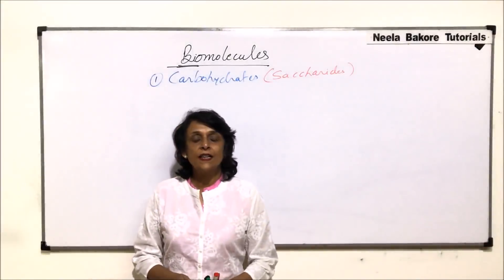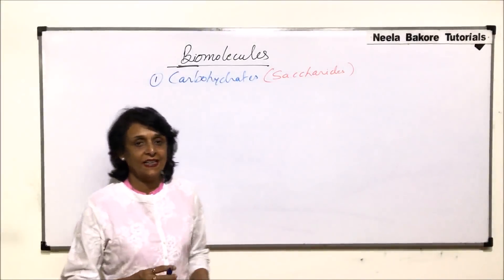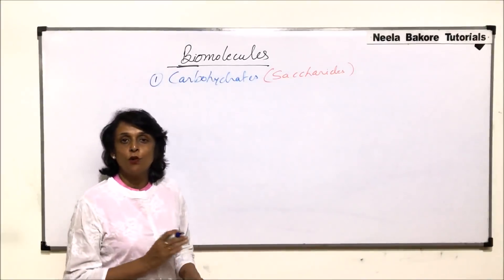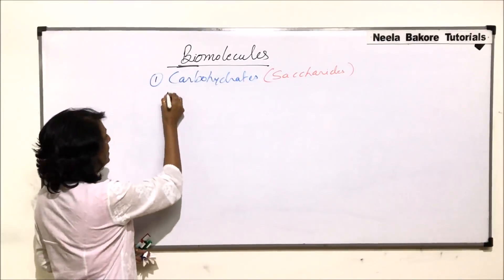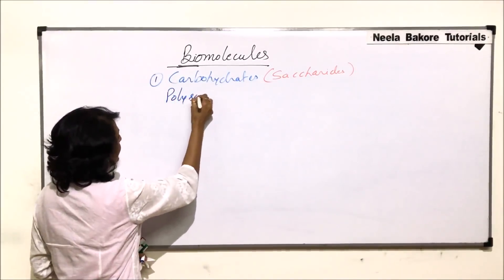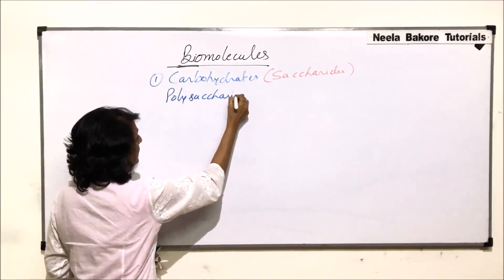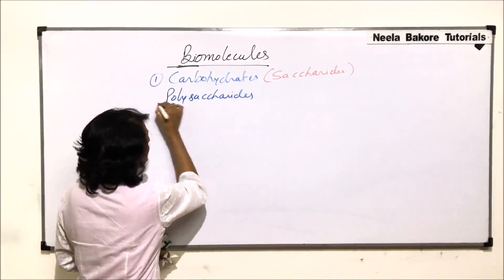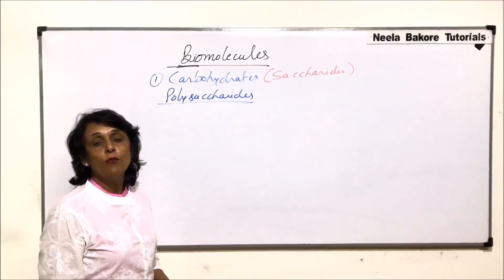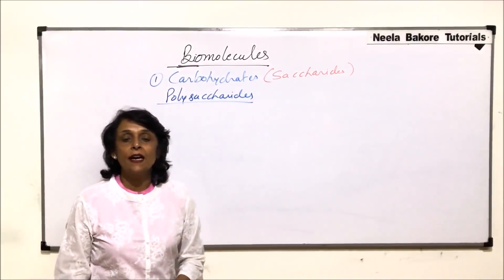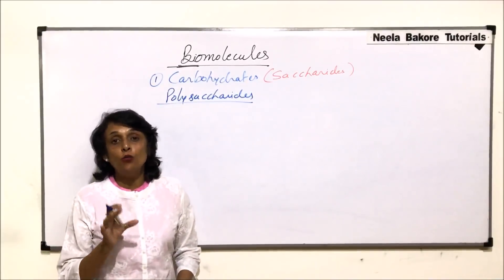Now we are starting with polysaccharides. We have discussed mono and disaccharides. Polysaccharides are those molecules where the number of monosaccharide units are in thousands.